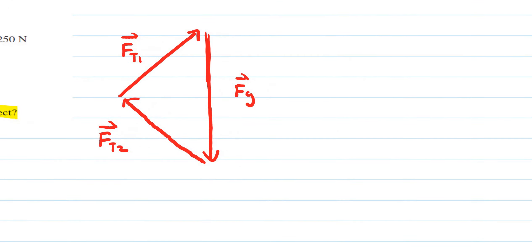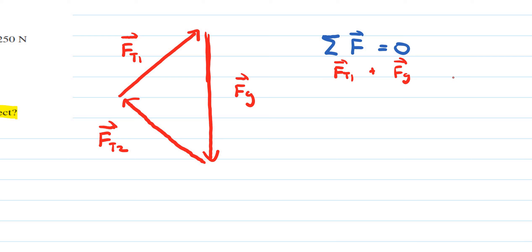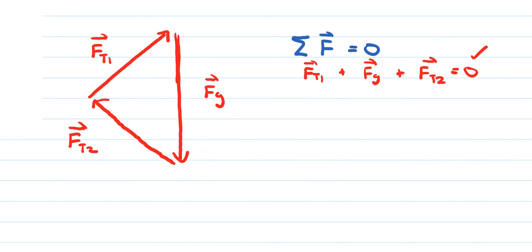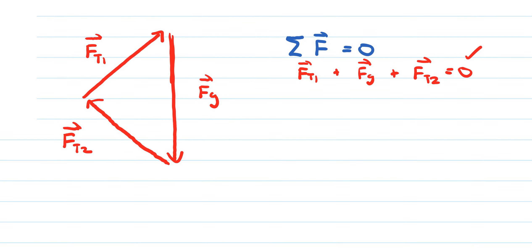Now that we've drawn our vector diagram, this is just illustrating that the sum of the forces acting on this object is equal to zero, because we're essentially adding all three vectors together — FT1 plus the force of gravity plus FT2 — adding from head to tail, and since we start and end at the same position, all the forces sum to zero.